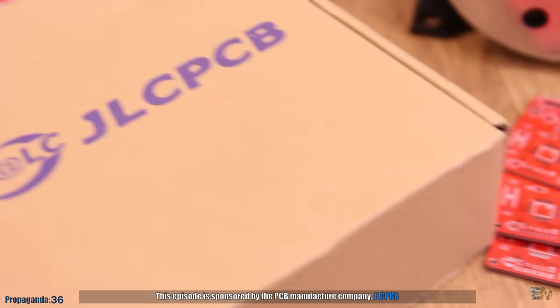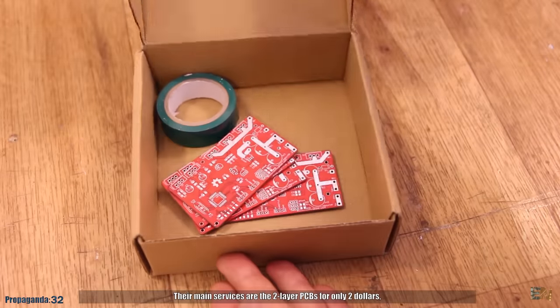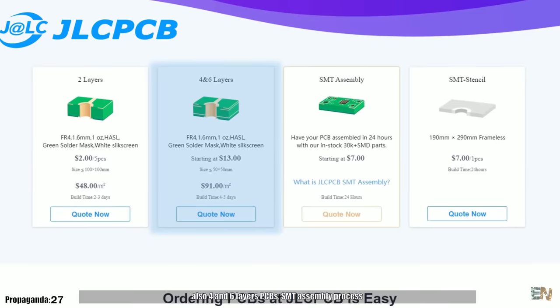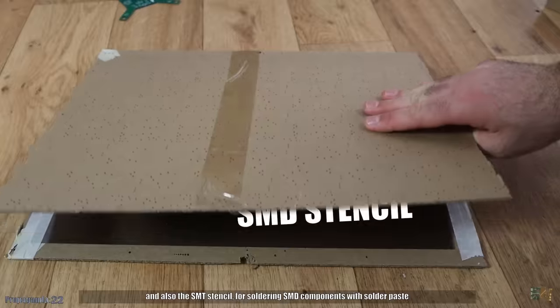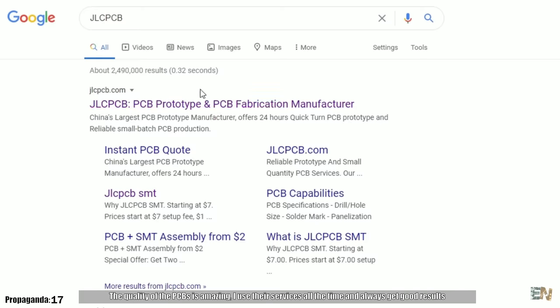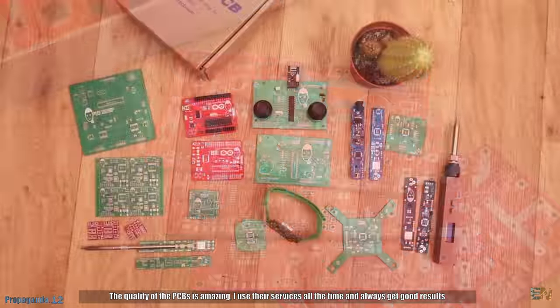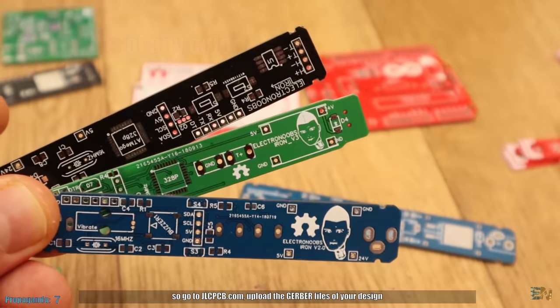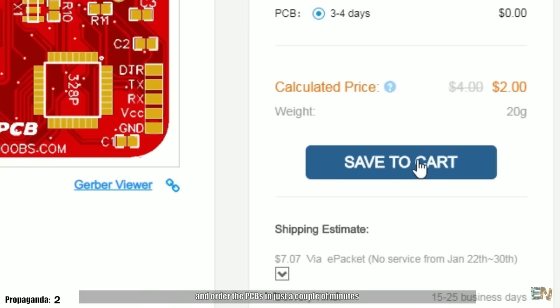This episode is sponsored by the PCB manufacture company JLCPCB. Their main services are the 2 layer PCBs for only $2. Also 4 and 6 layer PCBs, the SMT assembly process where you will get the PCBs with all the components already soldered in place and also the SMT stencil for soldering SMT components with solder paste. The quality of the PCBs is amazing. I use their services all the time and always get good results. For only $2 you have 5 PCBs of any color that you want. So go to JLCPCB.com, upload the gerber files of your design and order the PCBs in just a couple of minutes.